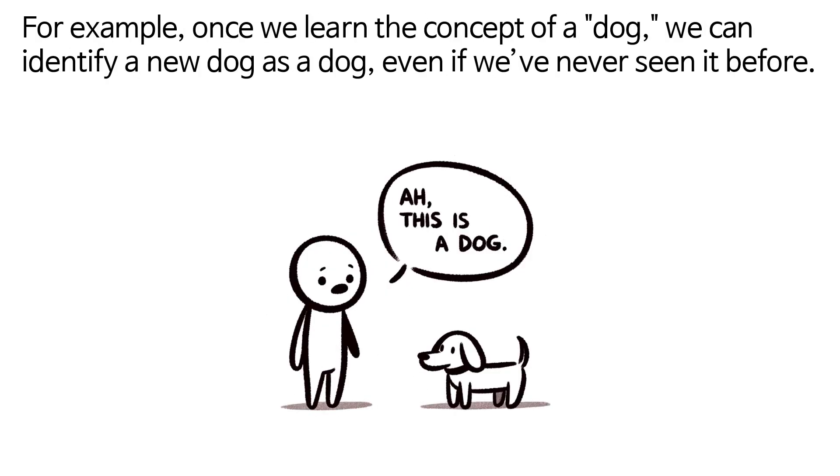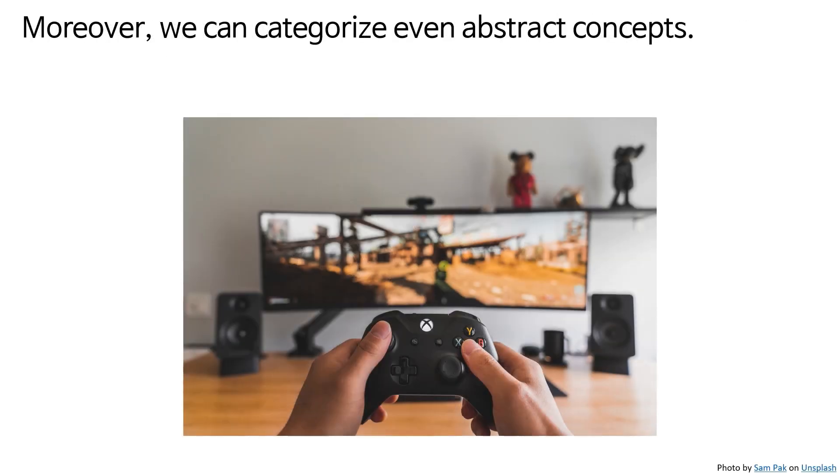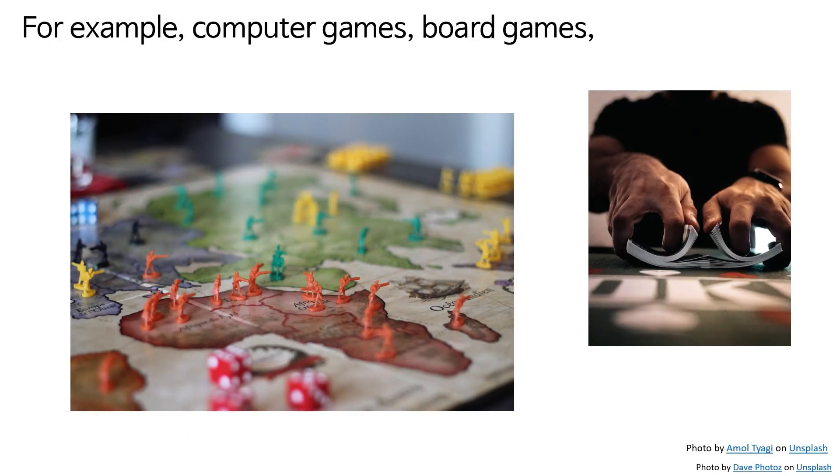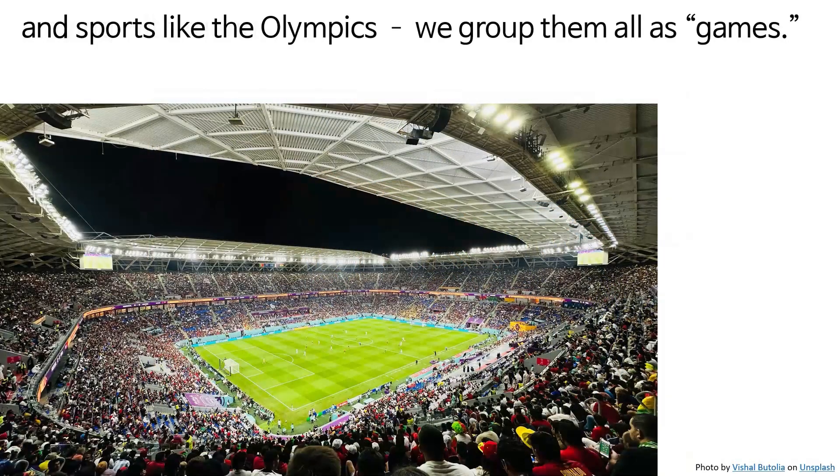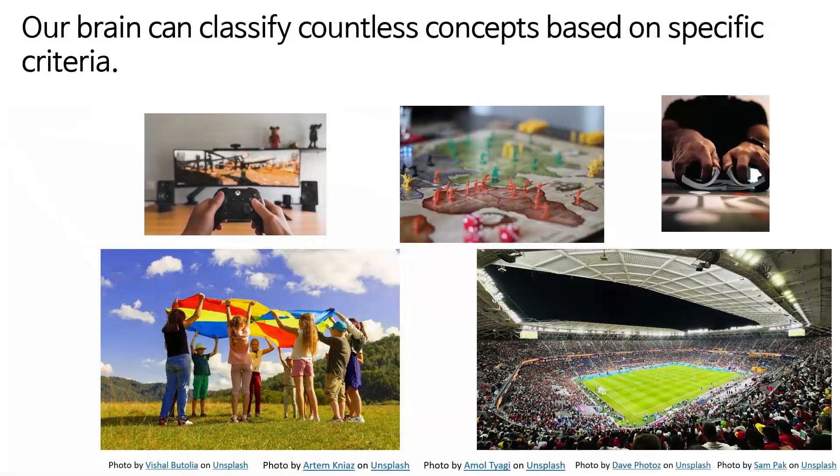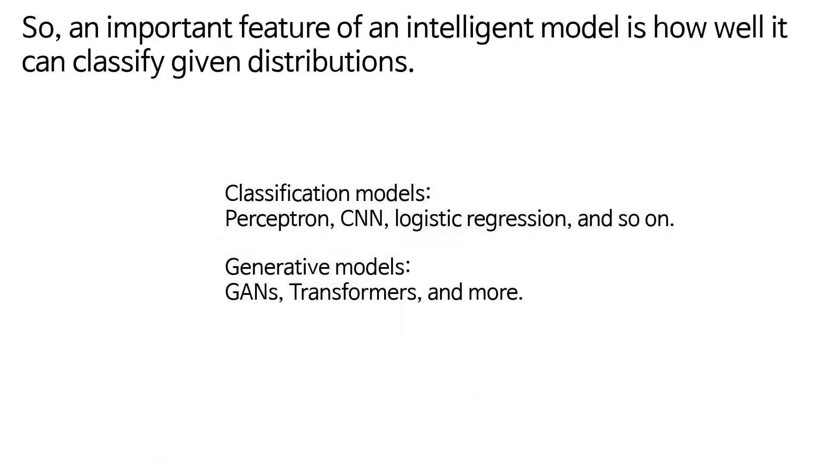For example, once we learn the concept of a dog, we can identify a new dog as a dog, even if we've never seen it before. Moreover, we can categorize even abstract concepts. For example, computer games, board games, playing with friends, and sports like the Olympics, we group them all as games. Our brain can classify countless concepts based on specific criteria.